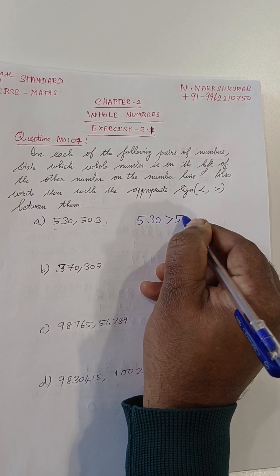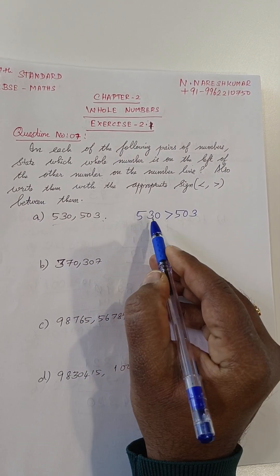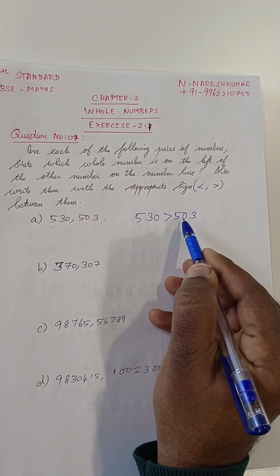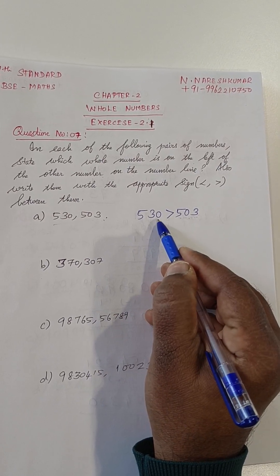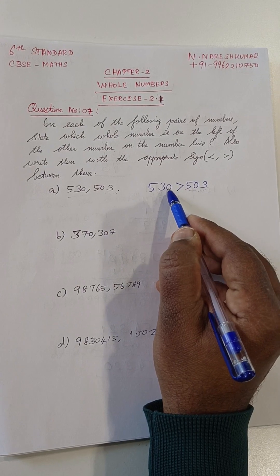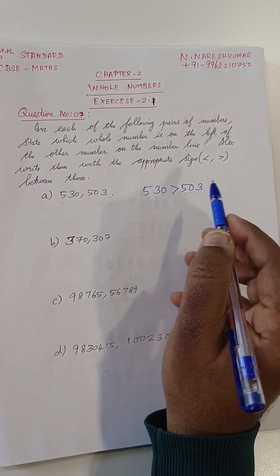530 is greater than 503. How? Because 503 is a smaller number, and while comparing these two numbers, 530 is greater. So, 530 is greater than 503.